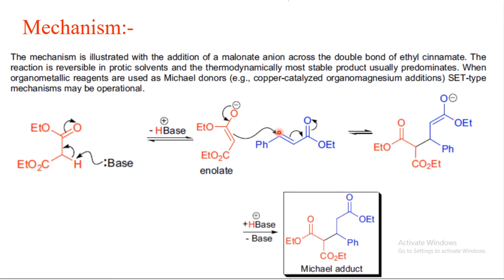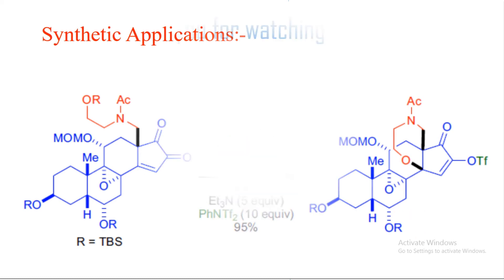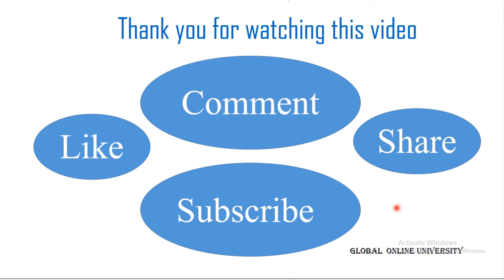The oxygen anion, on workup after quenching the reaction, forms the Michael adduct. Michael addition is generally used in total synthesis. One application shows the oxygen anion attacking on the alpha-beta unsaturated compound to form the Michael adduct. If you like this video, please like, comment, share, and subscribe. Thank you.